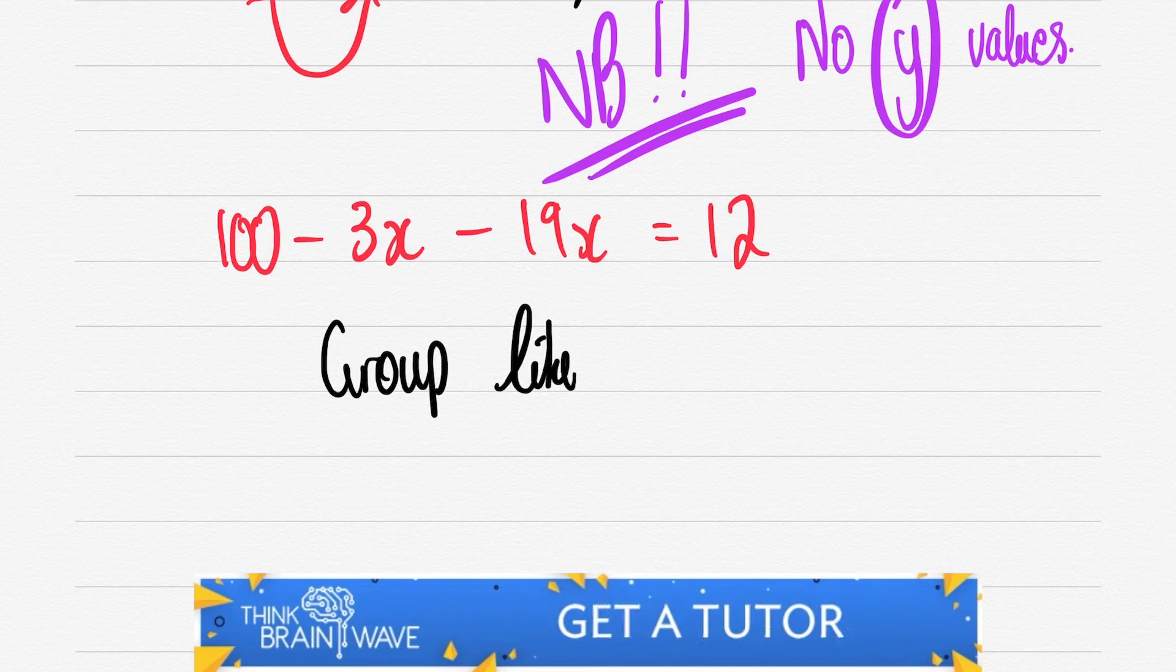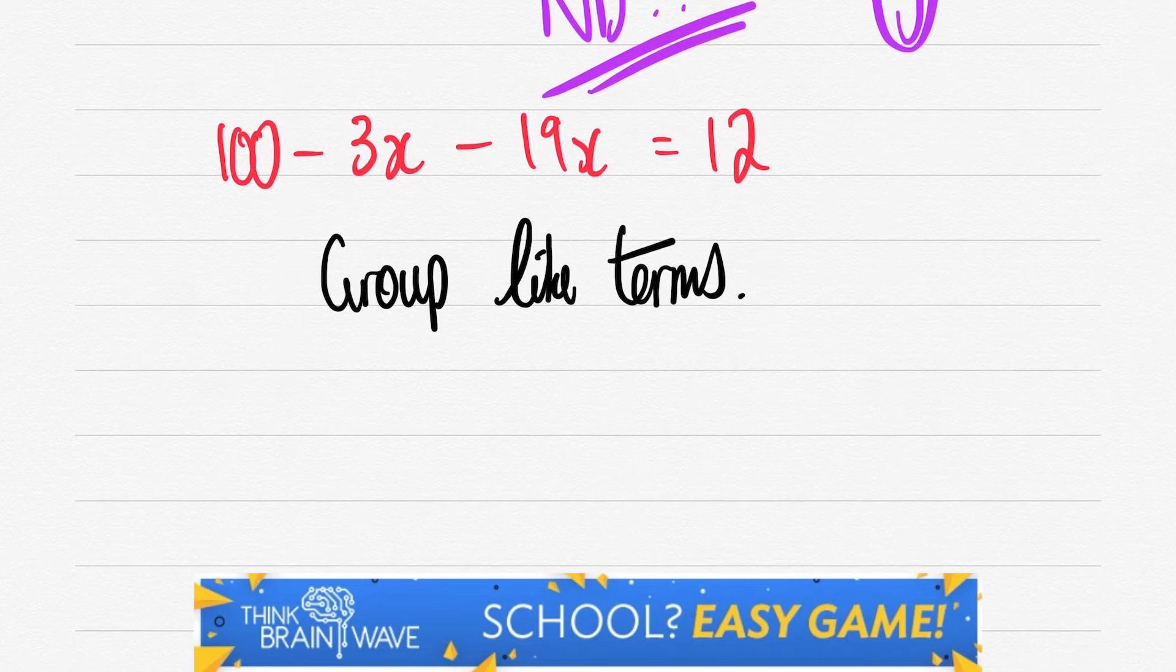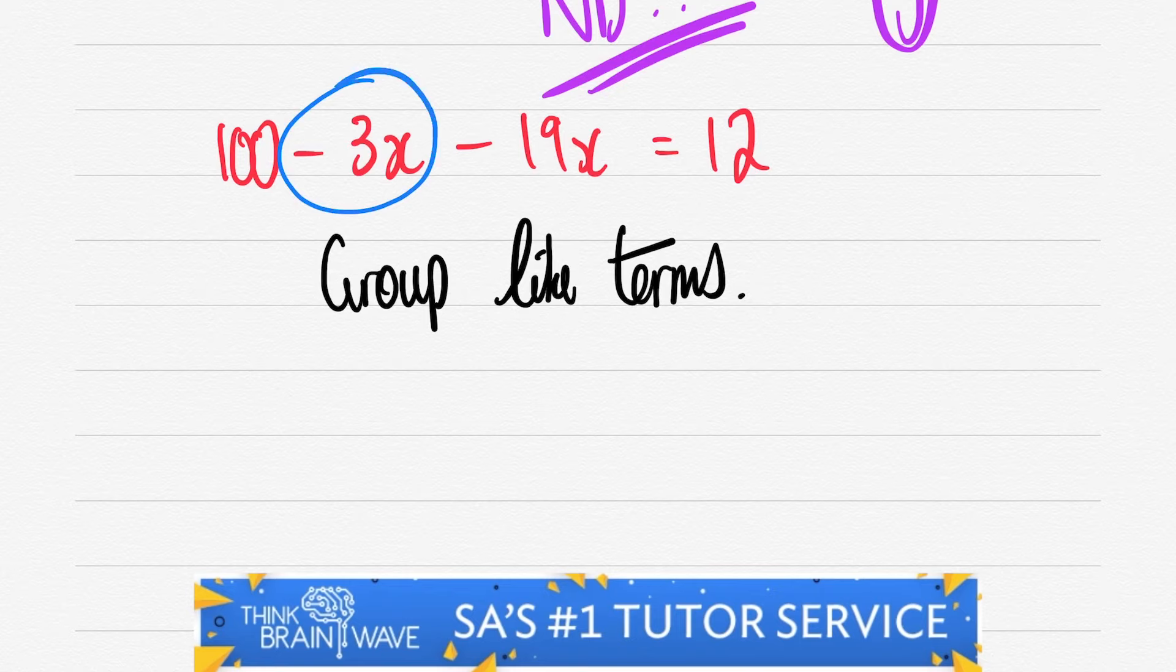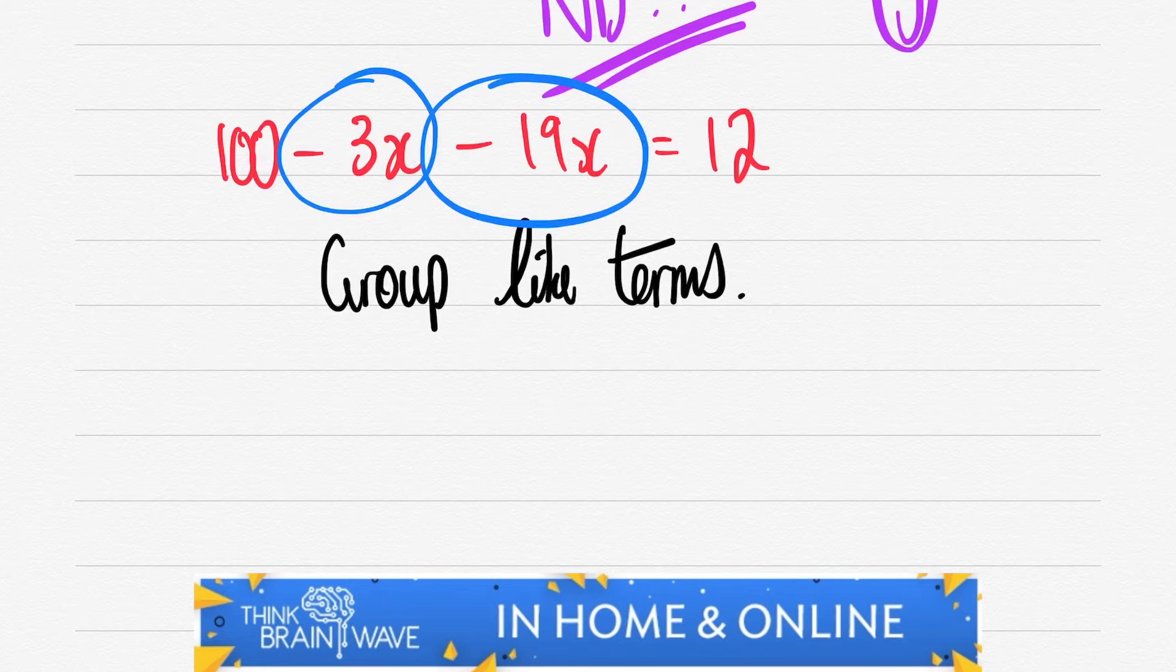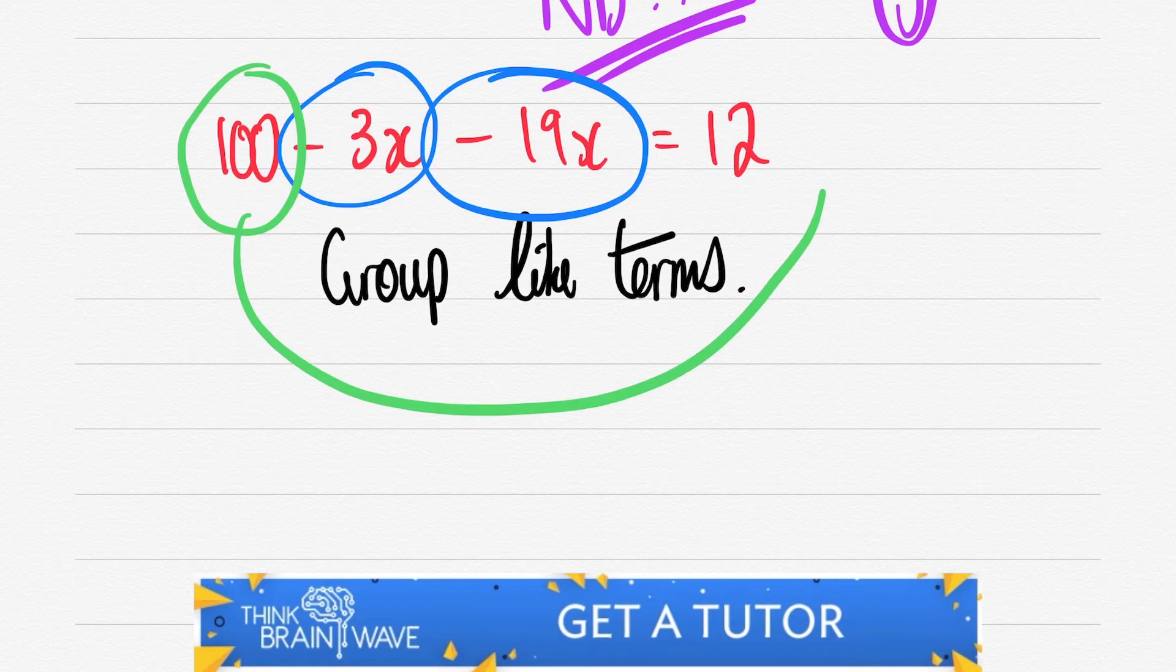So what do we do now? We now need to group our like terms. We've got two types of x's. We've got a -3 and a -19. So ideally we'd like to put them together on one side and we'd put the normal numbers on the other side.